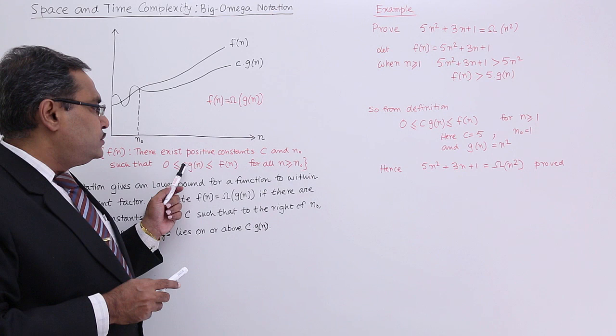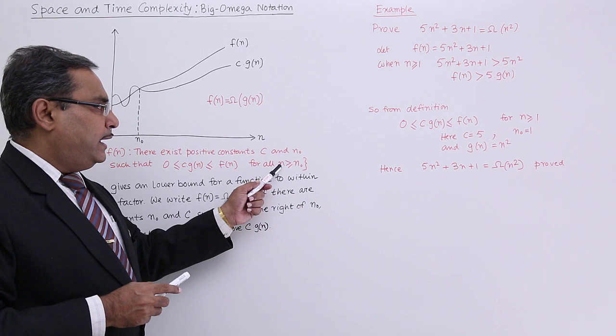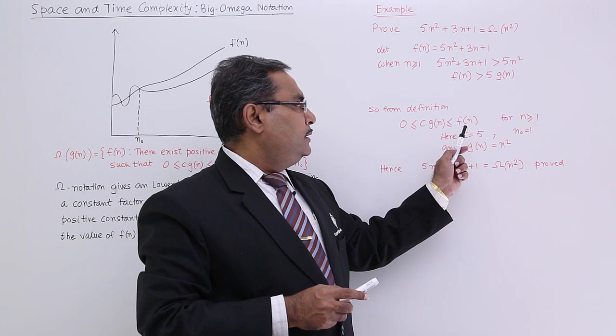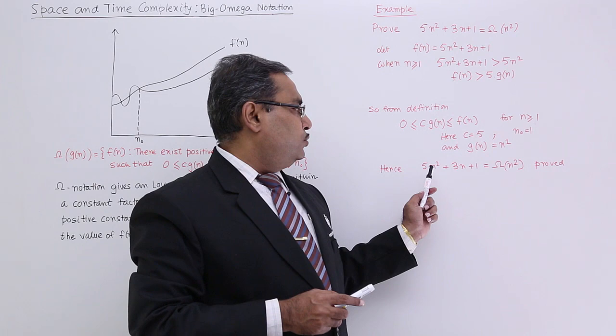0 less than equal to c into g of n is less than equal to f of n for all n greater than equal to n0. Here you see n0 is equal to 1, here c is equal to 5, and g of n is equal to n².